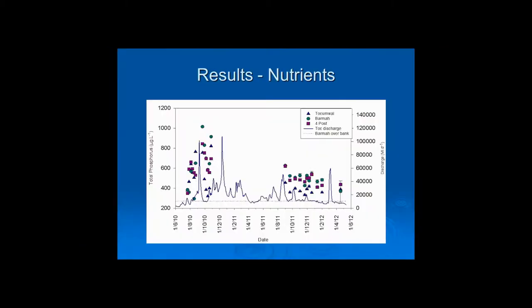Looking at total phosphorus: before any real connection to the floodplain, nutrient levels were quite similar above and below the Barmah Forest. With the commencement of flooding, there was a boost in nutrients throughout the system, but that increase was much higher downstream of the forest at the Barmah and Forepost sites. This was maintained throughout the 2011-12 period. By May 2012, nutrient levels were probably coming back down, though there was an interfering peak due to a big flood that came down Broken Creek.